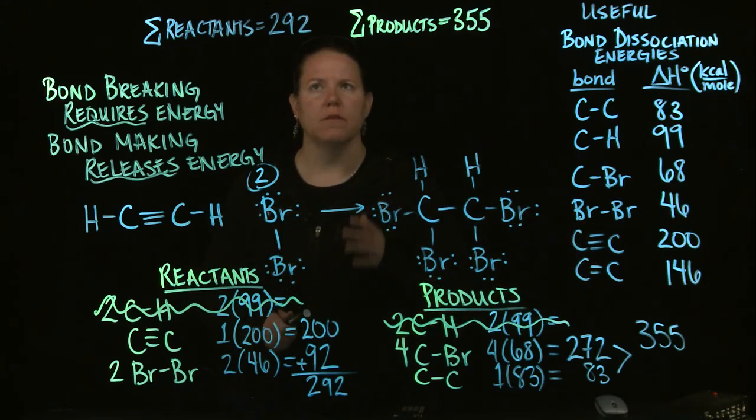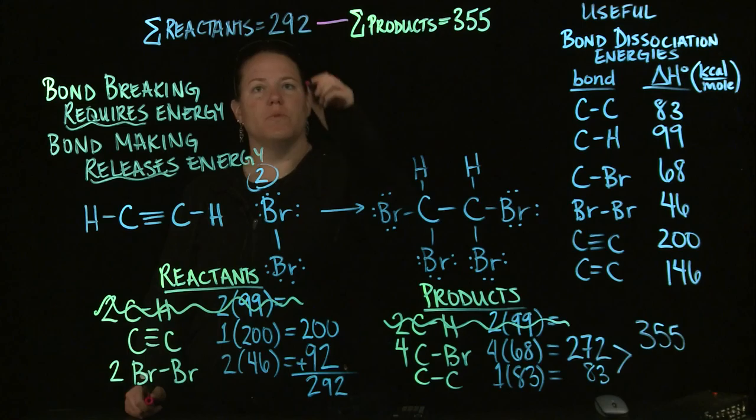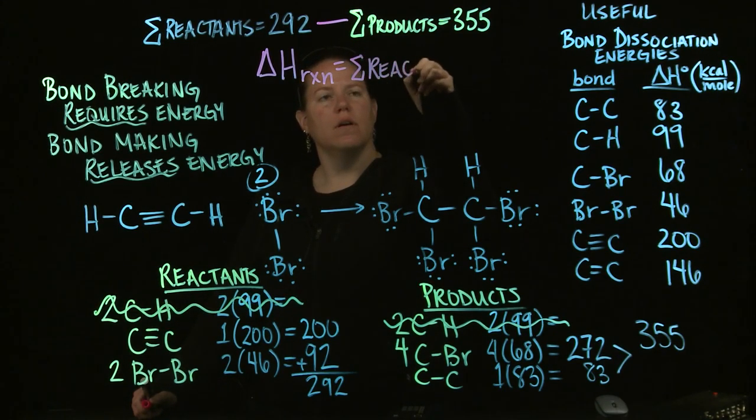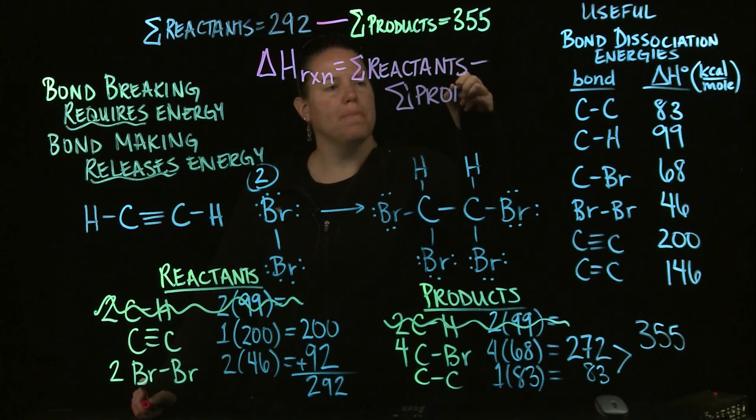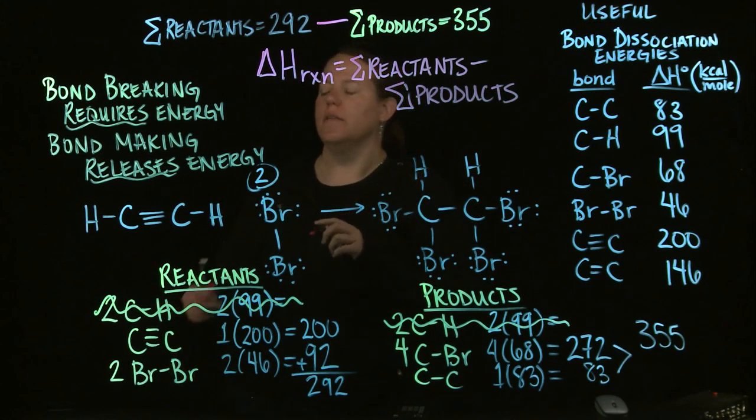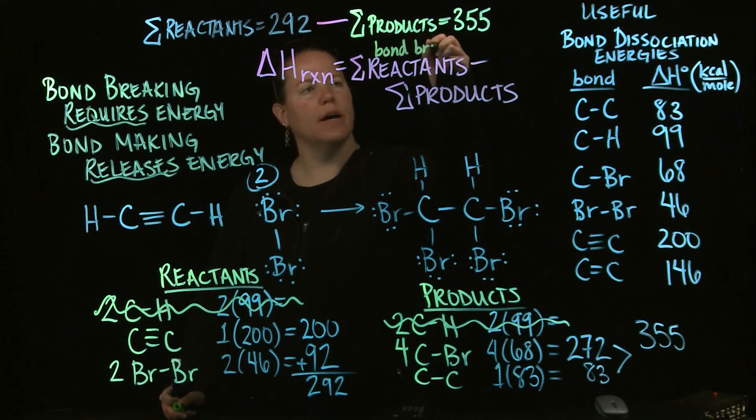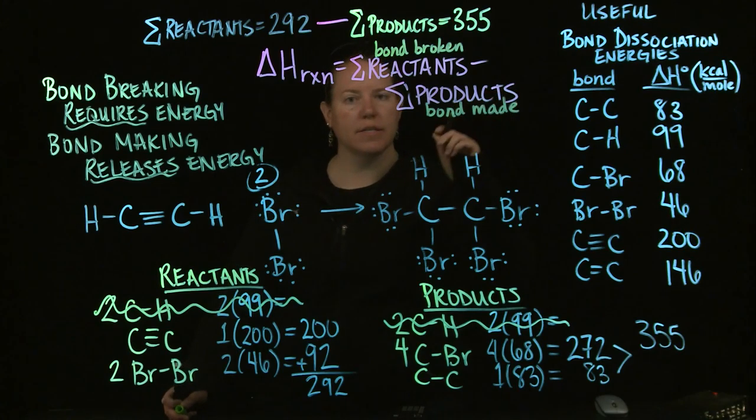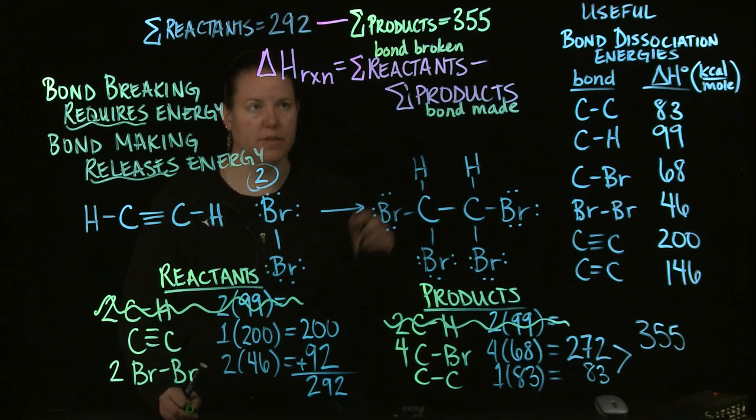So, in terms of this, what we're going to do is we are going to simply put a minus between these two, right? So, my delta H of reaction when I'm doing bond dissociation energies is going to be the exact opposite. The sum of the reactants minus the sum of the products. And that is simply to reflect that the bonds that are broken are on the reactant side and the bonds that are made are on the product side. And when something releases energy, we put a minus in front of it, which is why there's a minus in front of the products.